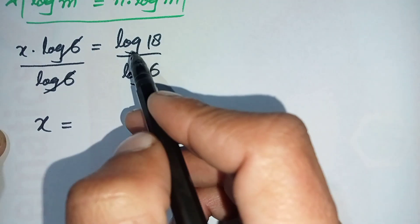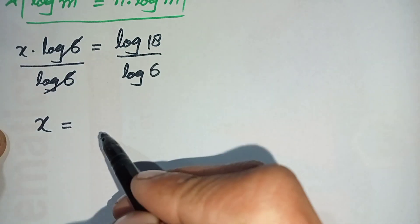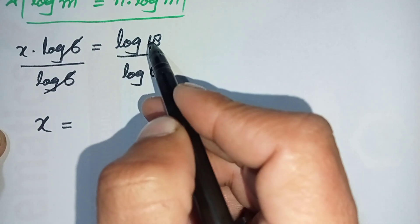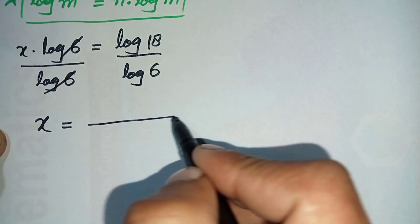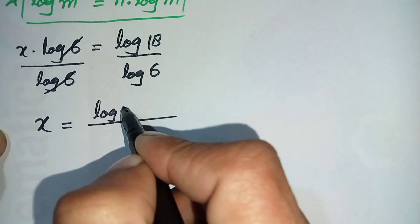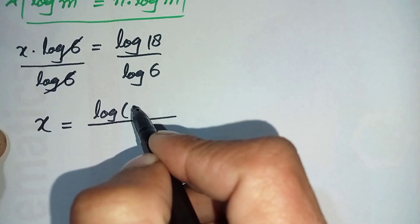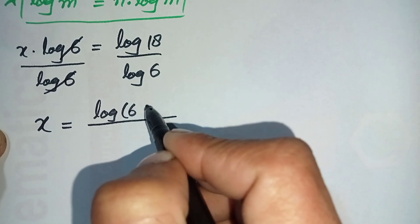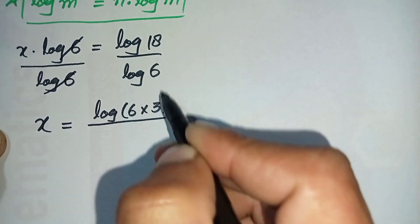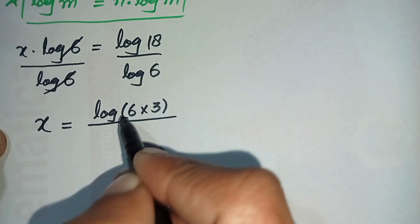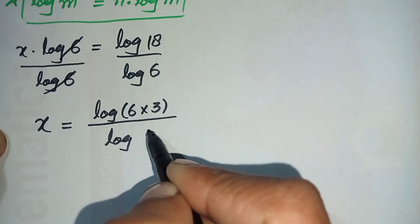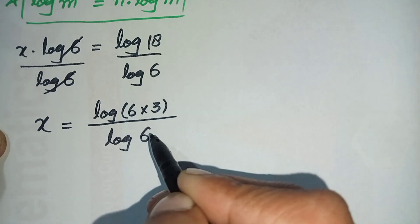On the right hand side we have log of 18 divided by log of 6. We can write log of 18 as log of 6 times 3, since 6 times 3 is 18, and the denominator log of 6 will be the same.